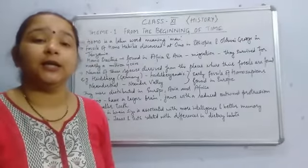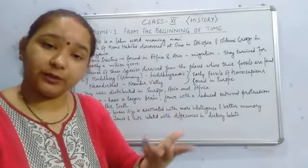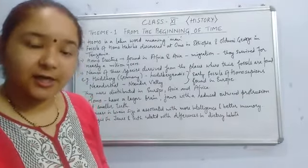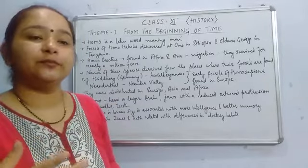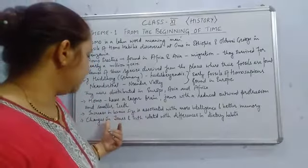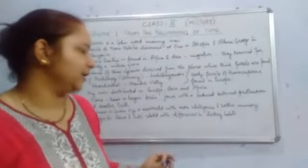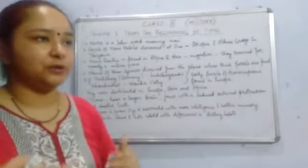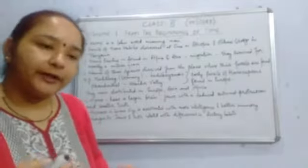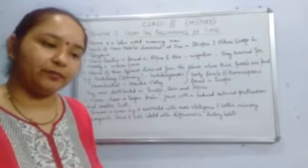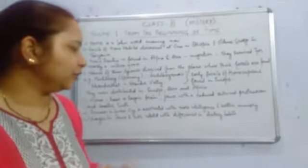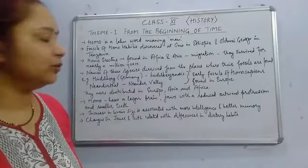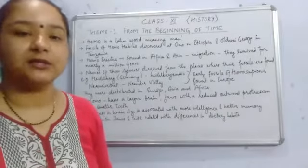Homos also had smaller teeth compared to australopithecus, where large teeth were present. These changes in jaws and teeth indicate that there was probably a change in their dietary habits — showing how a species adapts to its natural environment, with corresponding changes occurring in the body. This concludes the topic on homos.